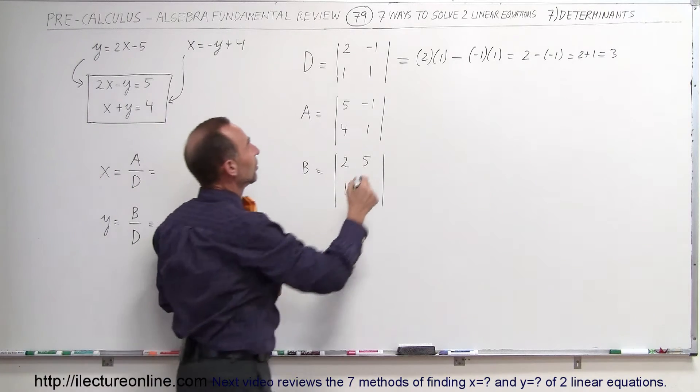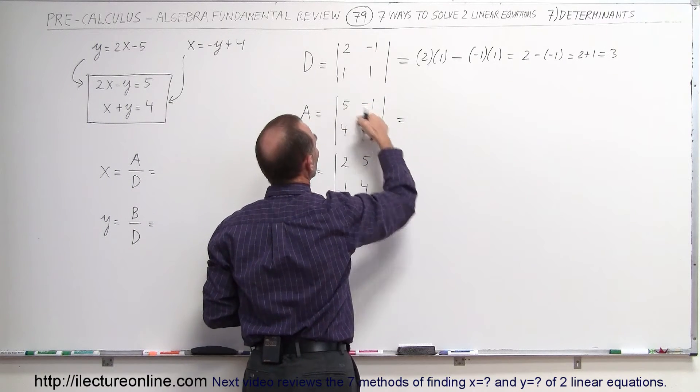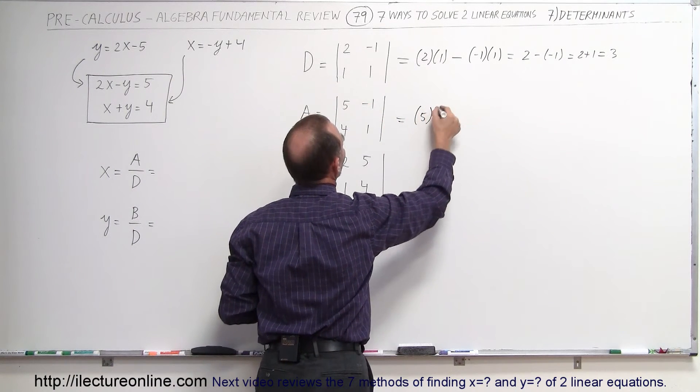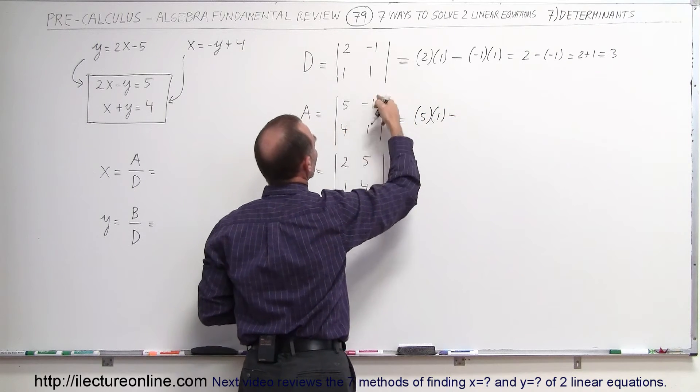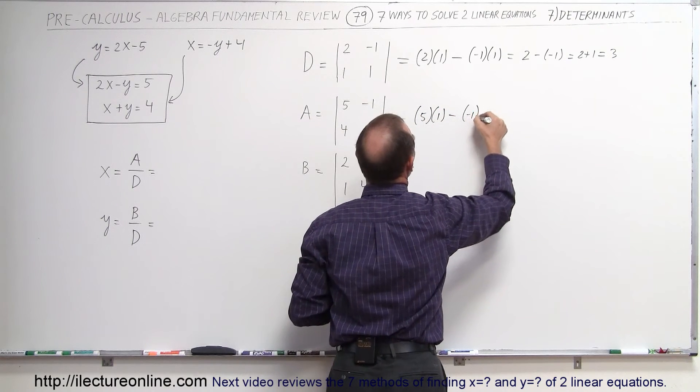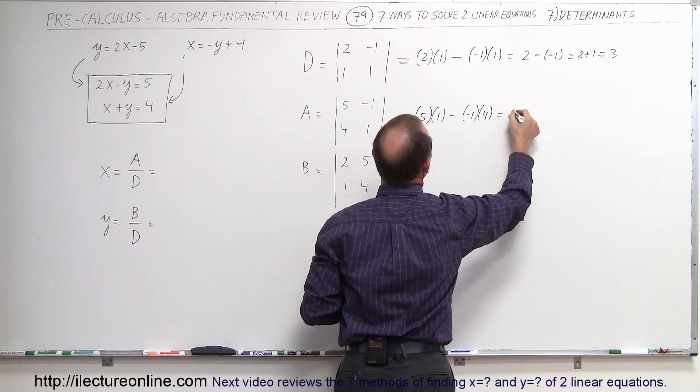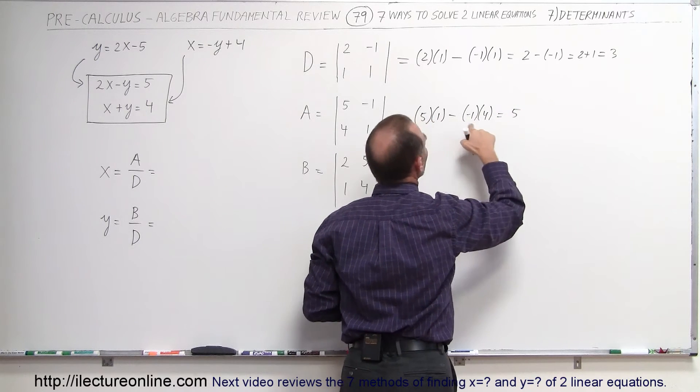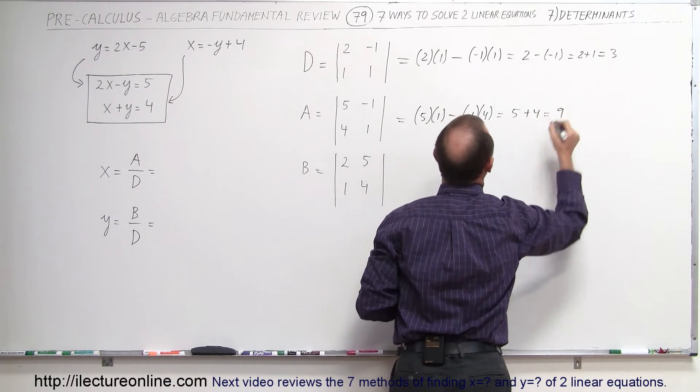The second we do the same thing, so this is equal to the product of those two, which is 5 times 1, minus the product of those two, which is minus 1 times 4. So this becomes 5 minus a minus 4, which is 5 plus 4, which is 9.